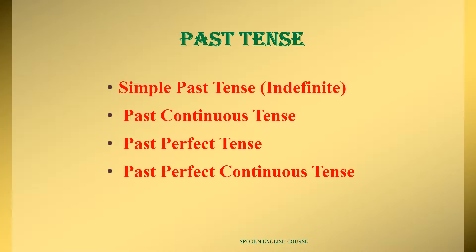So past tense, just like present tense, has the same four types: simple past tense, past continuous tense, past perfect tense, and past perfect continuous tense. Already, the same format from present tense is used in past tense with small modifications. If you have a clear idea of present tense, past tense will be very easy to learn.